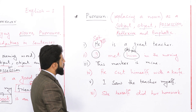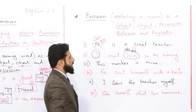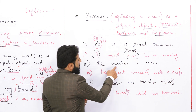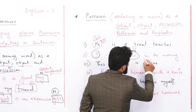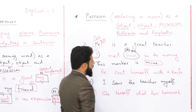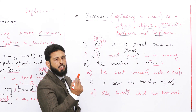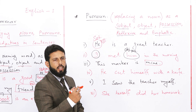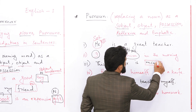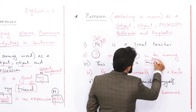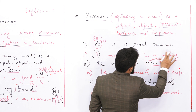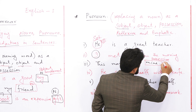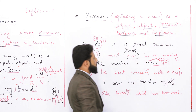تیسری sentence دیکھیں: 'This marker is mine'۔ یہ marker میرا ہے — اس marker کی ملکیت کی بات ہو رہی ہے۔ یہاں پر 'mine' pronoun ہے اور یہ possessive pronoun ہے۔